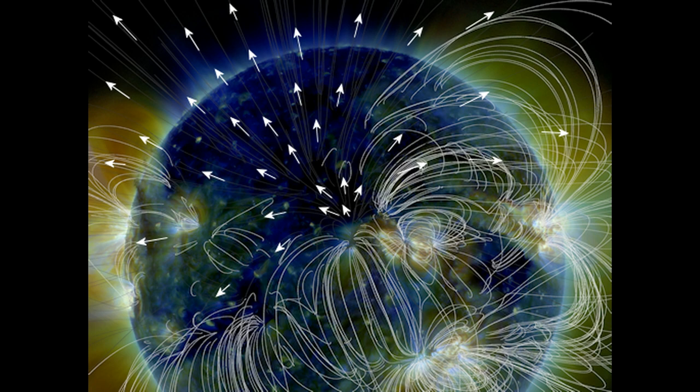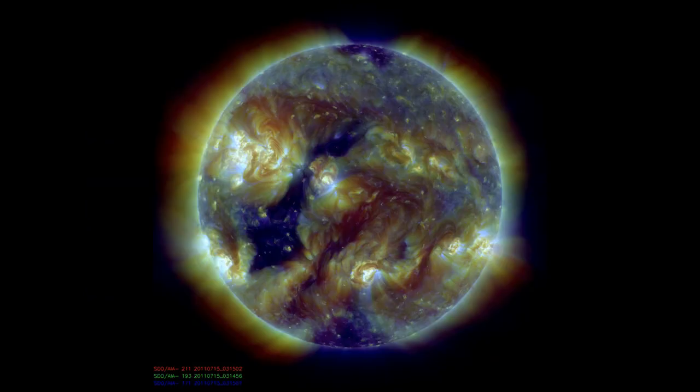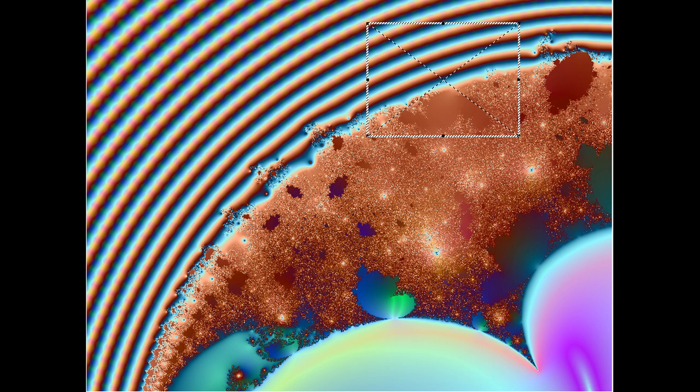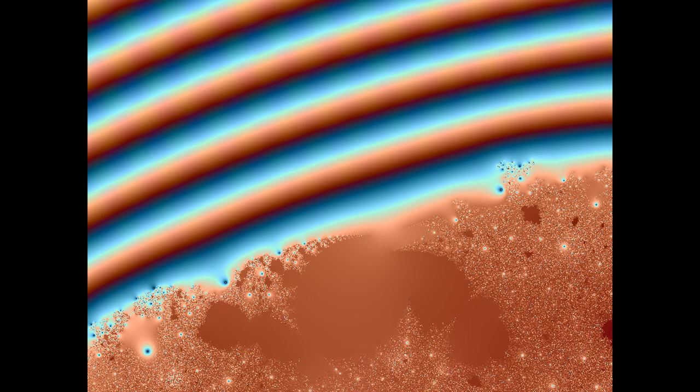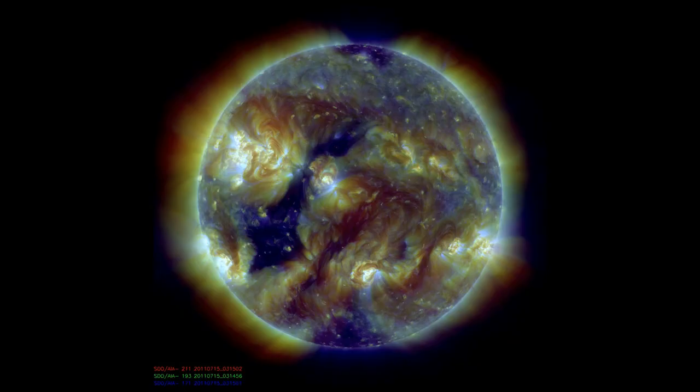Coronal holes exist permanently at the poles of the Sun, but they also exist at lower latitudes. Coronal holes are areas with few density cavities and sunspots. In the fractal model, both poles have few punch holes and cavities, hence they produce less radiation than the mid-latitudes. Dead zones, neutral sheets, and current sheets.